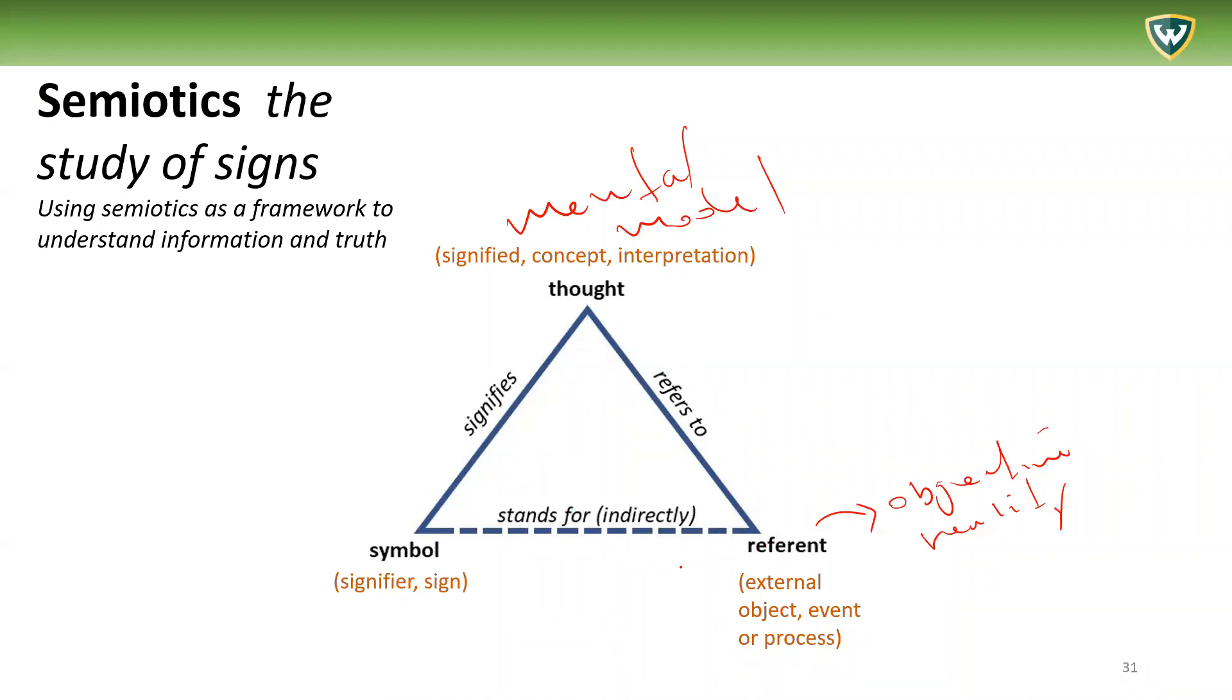Within the human world that we're talking about here, the symbol or the signifier has to go through the mental model. So a symbol can refer to an objective reality but usually has to pass through this intermediary interpretive stage.